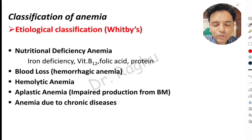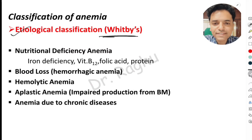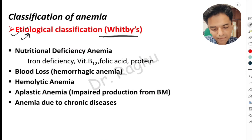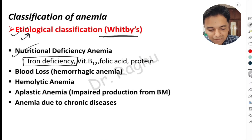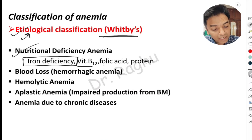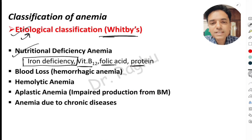The first classification is the etiological classification, also called Wintrobe's classification. Etiology means the cause, so we classify anemia depending upon its cause. The first and most important and most common form is nutritional deficiency anemia. Under this, the most important is iron deficiency anemia, followed by vitamin B12 deficiency anemia, folic acid deficiency, and protein deficiency — all of which come under nutritional deficiency anemia.